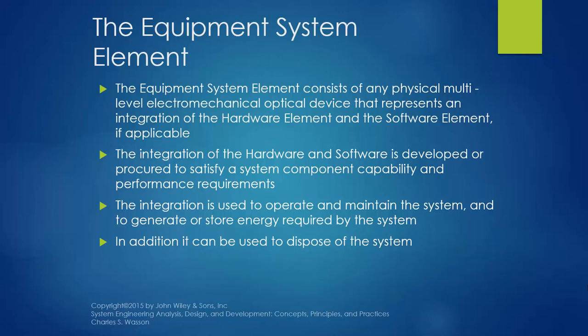The equipment element consists of any physical, multi-level, electromechanical, or optical device that represents an integration of the hardware element and the software element if applicable. The integration of hardware and software is developed or procured to satisfy system component capability and performance requirements. It can be developed in-house or procured from other vendors. The most important thing when we select or develop the hardware or software is that it is capable of accomplishing the mission. The integration is used to operate and maintain the system, generate or store energy required by the system, and can also be used to dispose of the system.